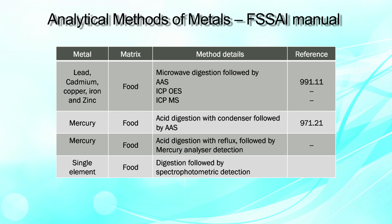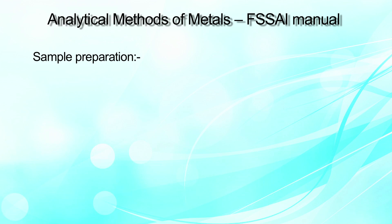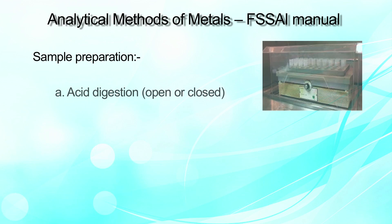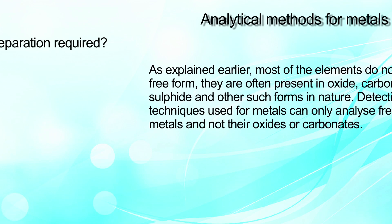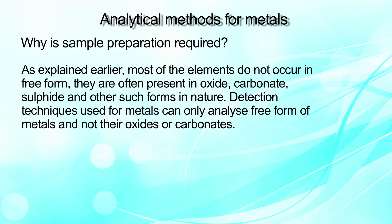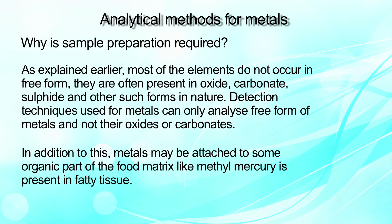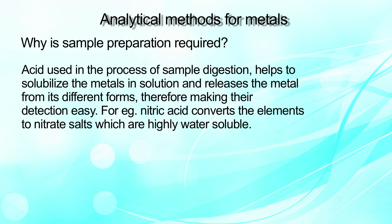Lead, cadmium, or mercury can be analyzed using AAS, ICP-OES, or ICP-MS. However, the important thing is sample preparation. It can be done by either acid digestion — open or closed method — or by ashing, dry or wet. As most elements do not occur in free form, they are often present as oxides, carbonates, sulphides, and other forms in nature. Detection techniques can only analyze the free form of metals, not their oxides or carbonates. Additionally, metals may be attached to organic parts of the food matrix, like methylmercury present in fatty tissues. Acid used in sample digestion helps to solubilize the metal and release it from its different forms, making detection easy.